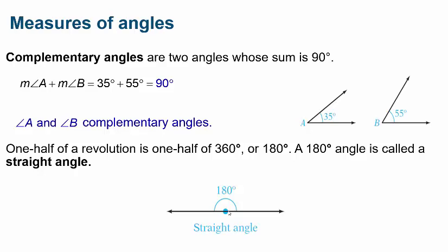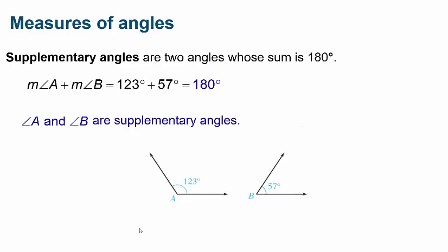Complementary angles are two angles whose measures sum to 90 degrees. For example, angle A measures 35 degrees and angle B measures 55 degrees; 35 plus 55 equals 90, so angle A and angle B are complementary angles. One-half of a revolution is one-half of 360 degrees, or 180 degrees. A 180-degree angle is called a straight angle.